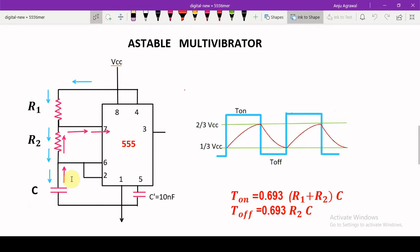then it starts discharging through resistance R2 and the discharge pin number 7, and the output voltage at pin number 3 changes from high to low automatically. That is why this is called an astable multivibrator.